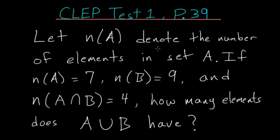Let n(A) denote the number of elements in set A. If n(A) equals 7, n(B) equals 9, and the number of elements in the intersection of A and B equals 4, then how many elements does the union of A and B have?